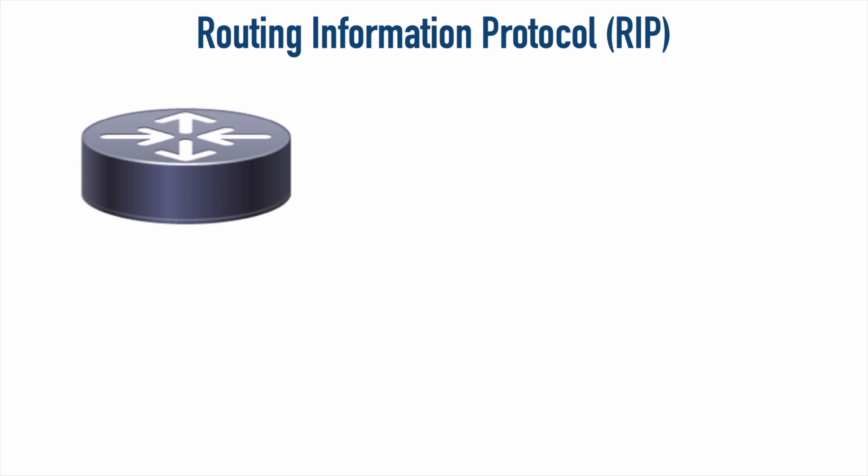One of the dynamic routing protocols you need to know about for the Network+ exam is RIP, which stands for Routing Information Protocol. First up is RIP version 1, or RIPv1. I would not use this on a modern network — I actually did use it at a university back in the early 1990s — but I certainly would not use it today. It has some undesirable characteristics, for example the way it sends routing information to other routers is through broadcasts.